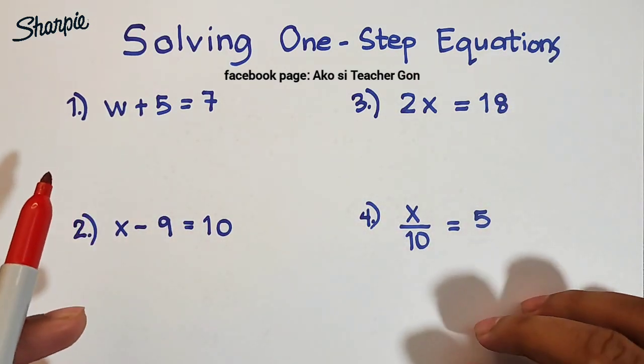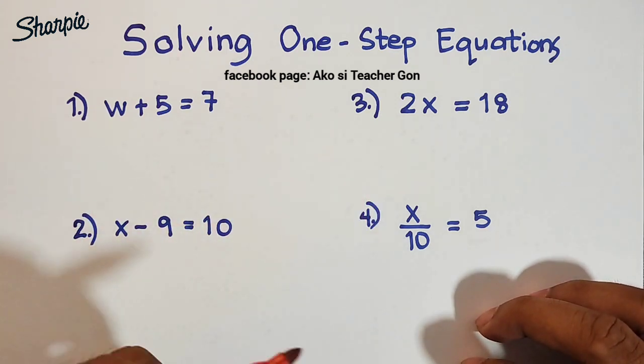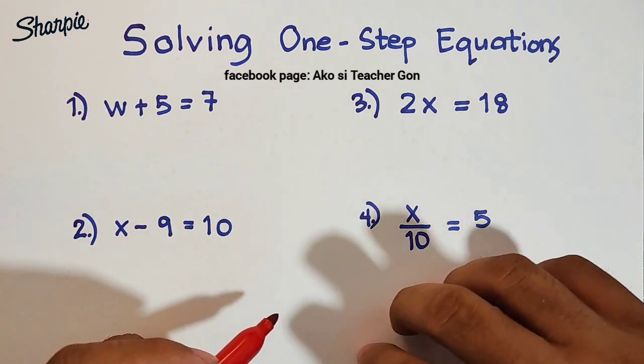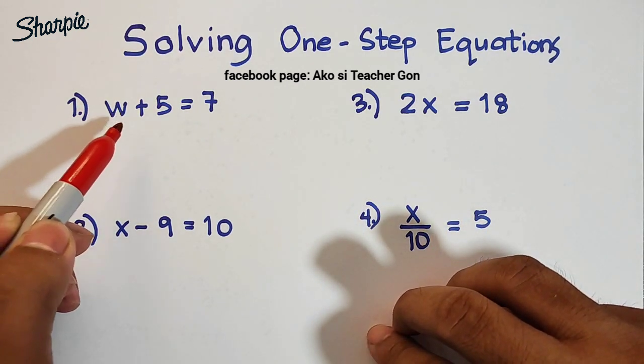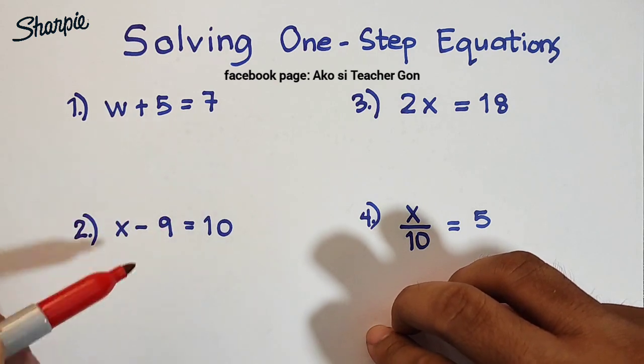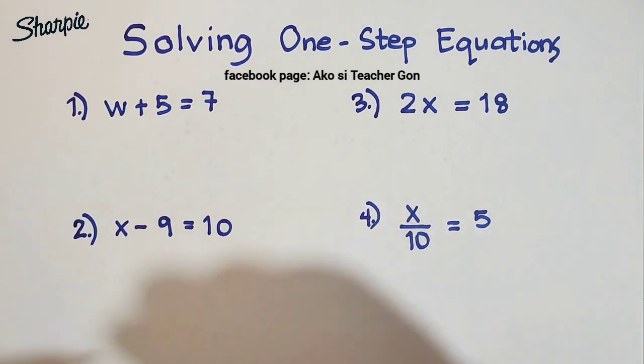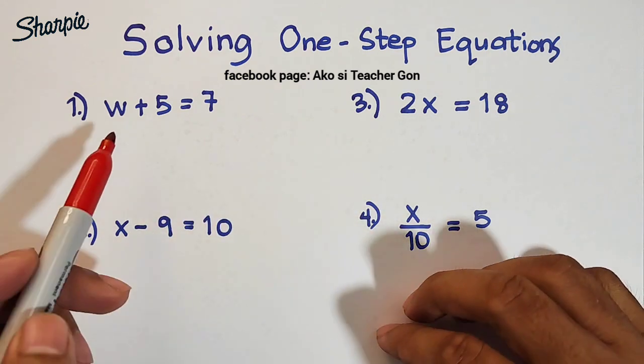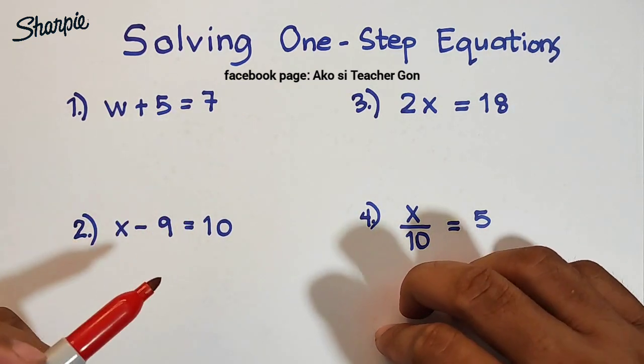For us to solve these four different items, we need to use the different properties of equality. Let's start with item number one. In number one we are given w + 5 = 7. Again, w + 5 = 7. We need to find the value of w.